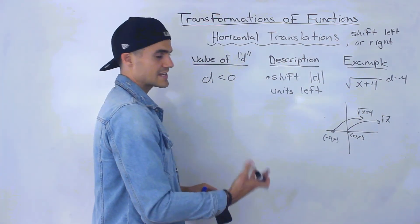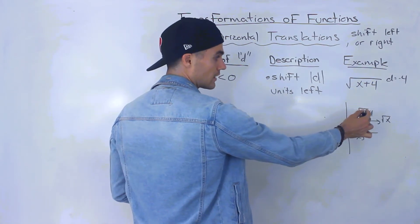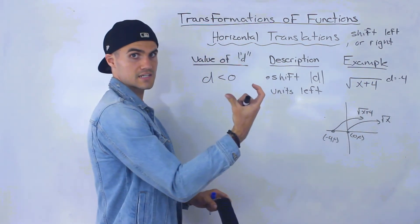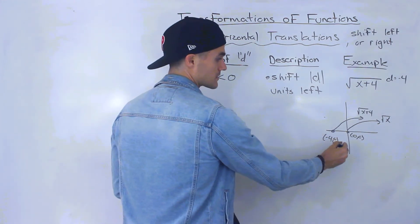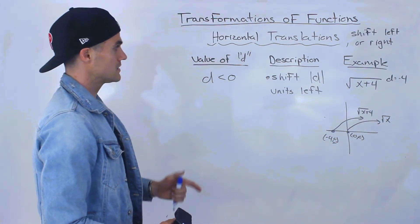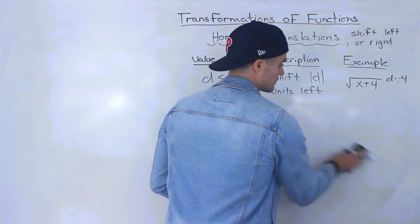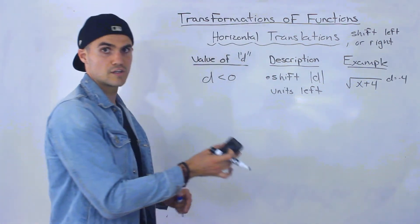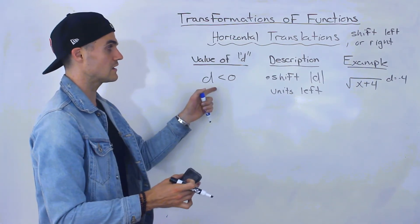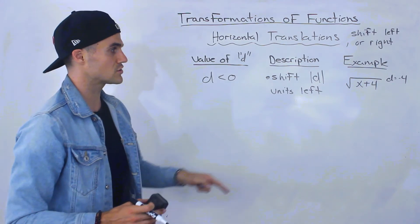You can actually test this: take the x value negative 4 and plug it in. Negative 4 plus 4 is 0, and the square root of 0 is just 0. So to summarize: if the d value is positive, you're shifting to the right; if d equals 0, there's no shift; and if d is negative, you're shifting the absolute value of d units to the left.